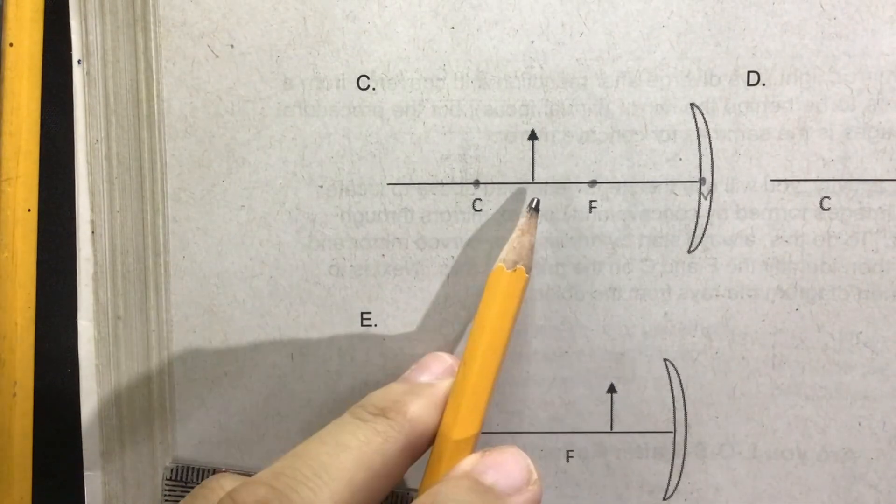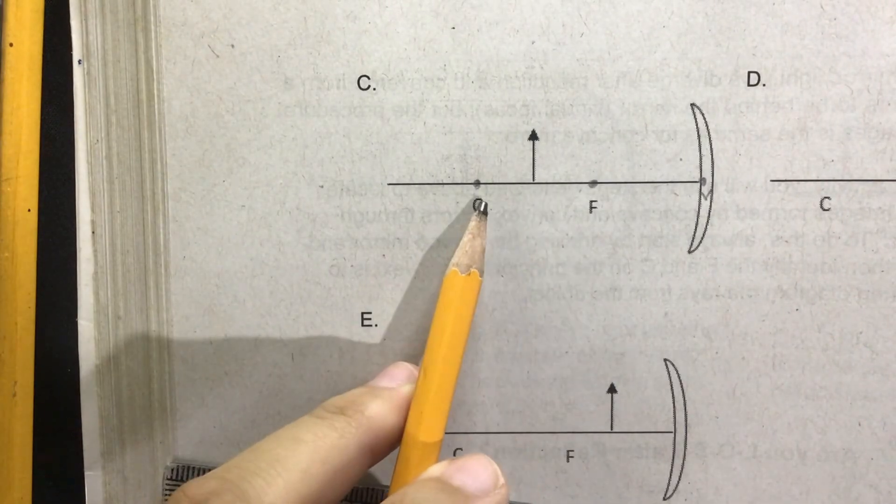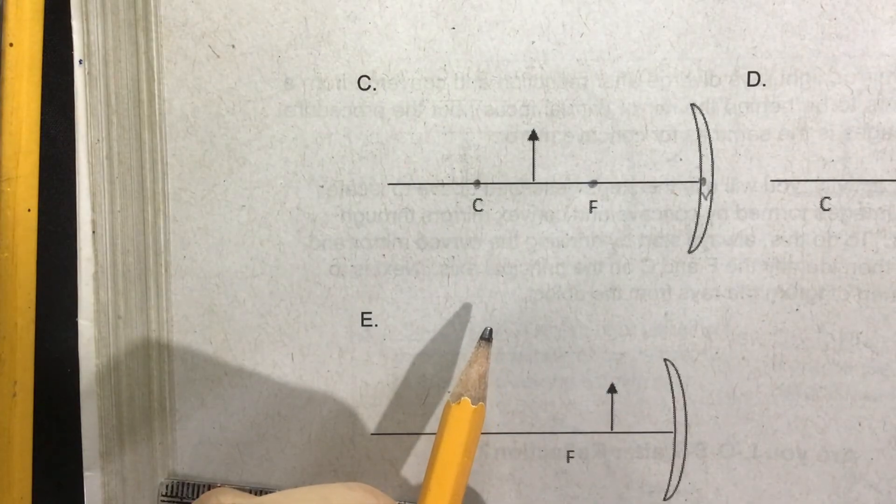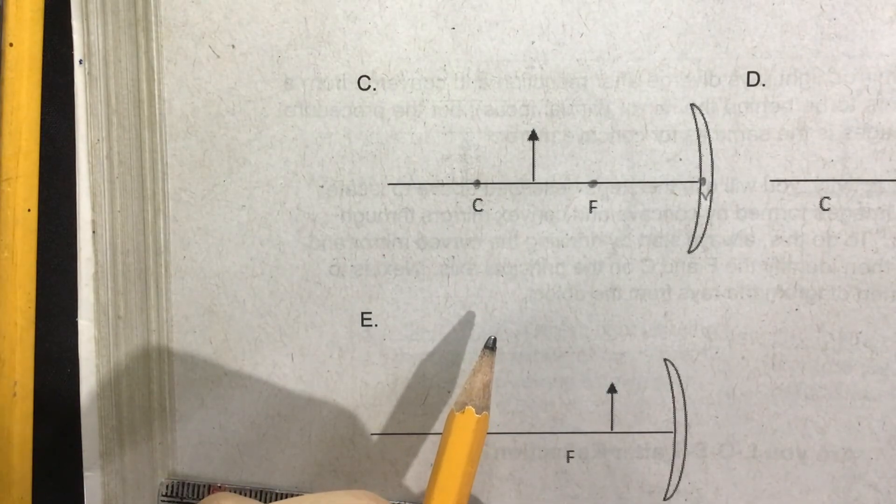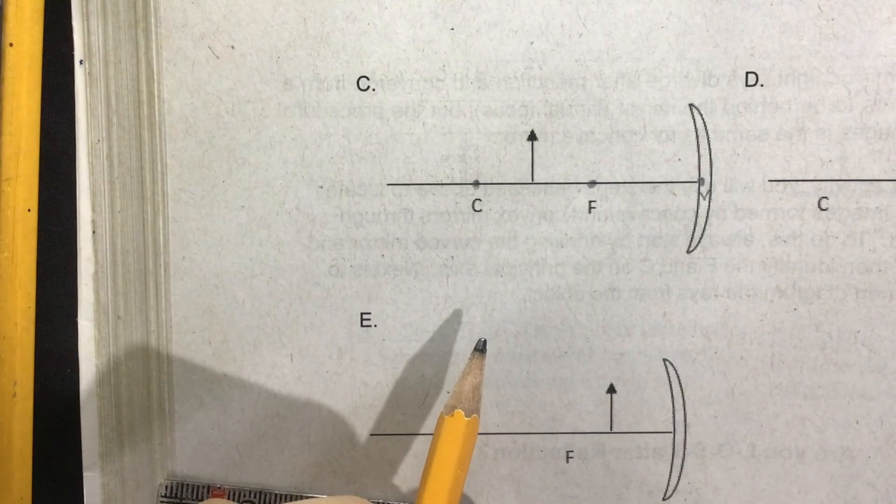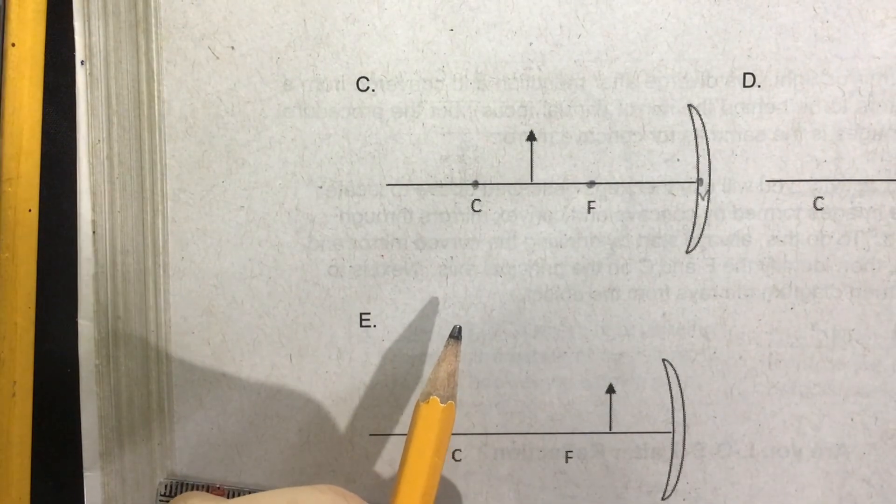Hi everyone, this time the object is located between C and F. Where do you think will our image be located? Let's find out. First, let's perform the first principal ray, and that is the PF ray.